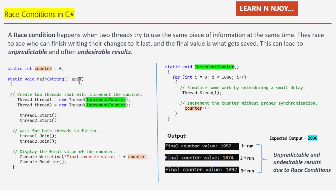There is a main method, the entry point of the application. I am creating two threads that will increment the counter: `Thread thread1 = new Thread(IncrementCounter)` and `Thread thread2 = new Thread(IncrementCounter)`. The `IncrementCounter` method has a for loop that executes 1000 times. Inside the loop, `Thread.Sleep(1)` simulates some work with a small delay, then `counter++` increments the shared variable — without proper synchronization.